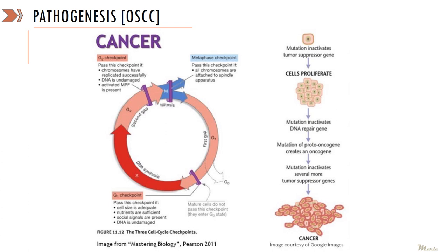Coming back to the cell cycle, the various checkpoints that kept proliferation in check are hampered as a result of genetic defects in these three main groups of genes, resulting in uncontrolled and uncoordinated growth of cells and leading to the development of oral cancer.